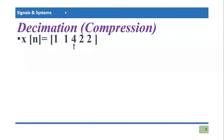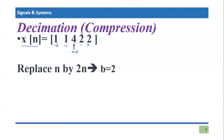Let's take an example of time decimation — time scaling in discrete time signal when we are performing compression. We have a discrete time signal x(n) with values {1, 1, 4, 2, 2}, where the arrow indicates n=0. So n=0 has value 4, n=1 and n=2 have value 2, and n=-1 and n=-2 have value 1. If we compress this signal in time domain, we scale the time index n by a certain number — let's say b equals two.